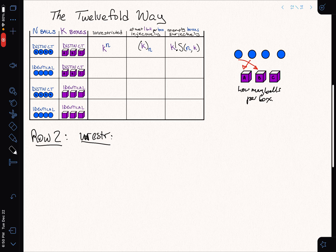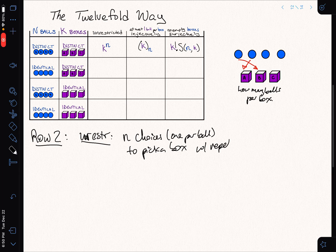Once we figured that out, now we'll look at the unrestricted case. What are we doing? Well, each box, so we have n choices, one per ball, to pick a box with repetition. Because I can pick box A as many times as I like. So that means that I'm getting the multi-choice coefficient. K options, K boxes, choose n of them with repetition.